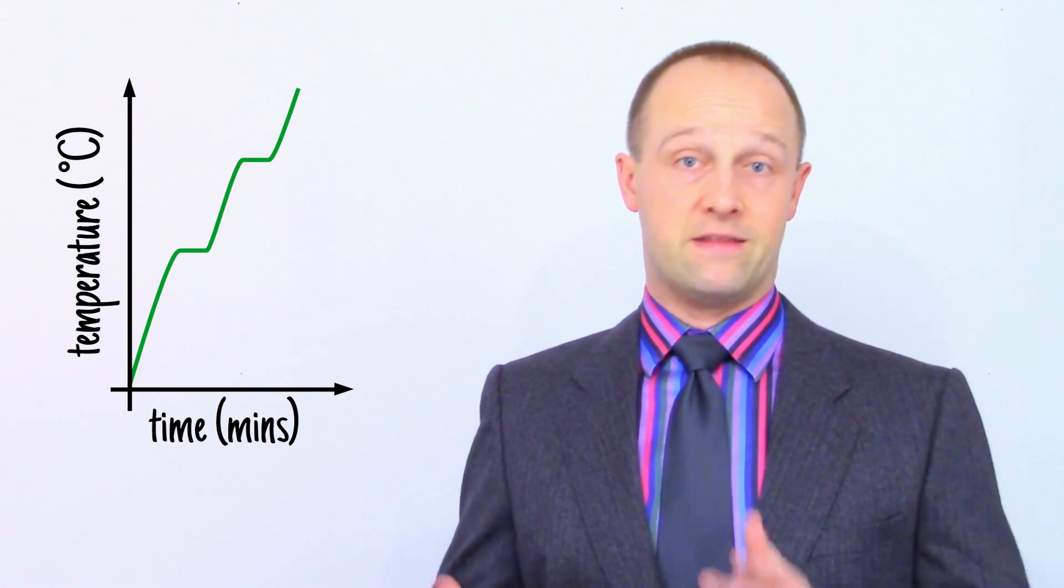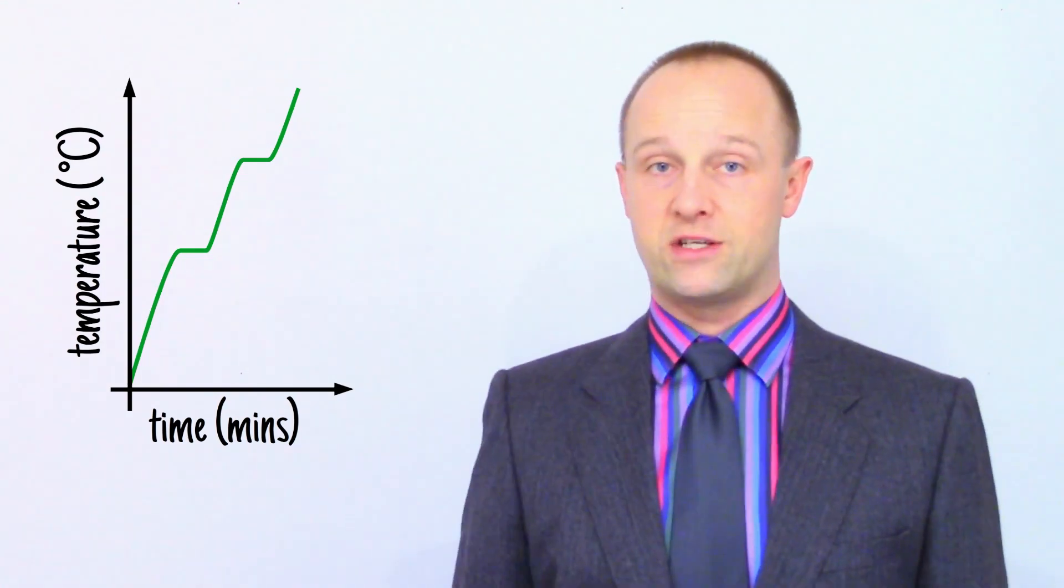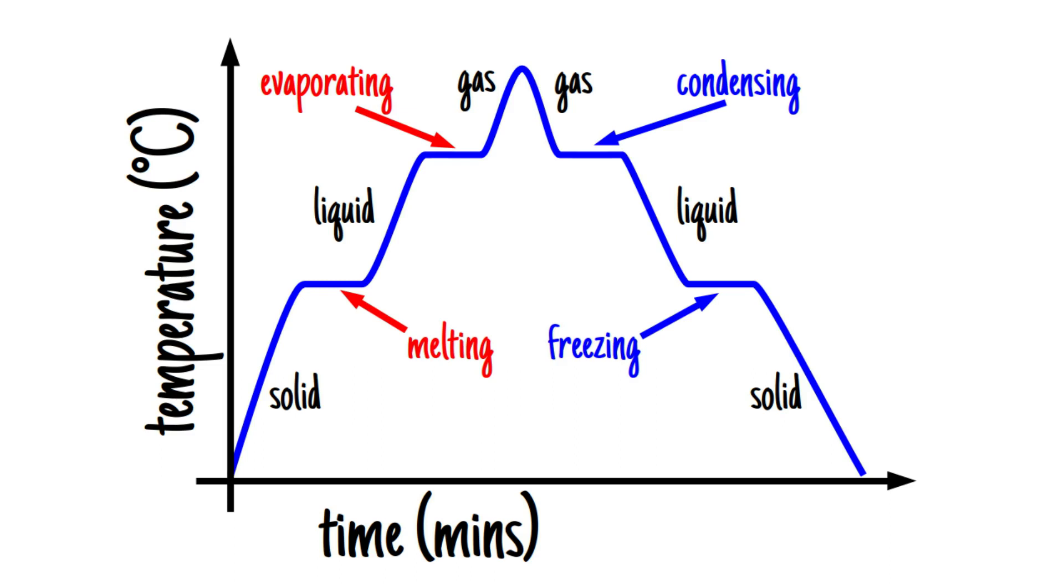As you've probably realised, this next zero gradient section is another state change. Because we've already gone from solid to liquid, this must be the one from liquid to gas as it's at a higher temperature. If we allowed our gas to cool again, we'd see the same behaviour in reverse.